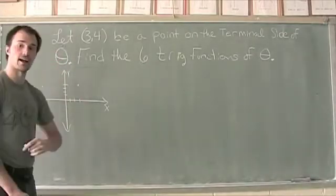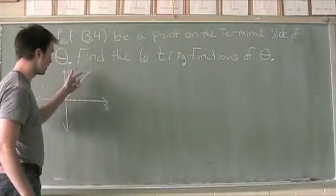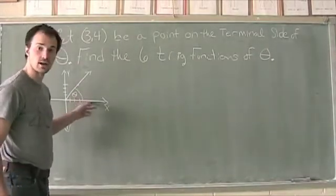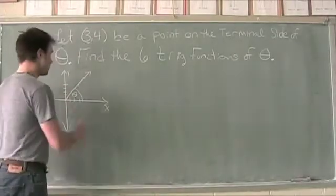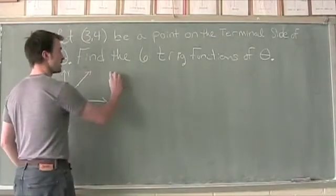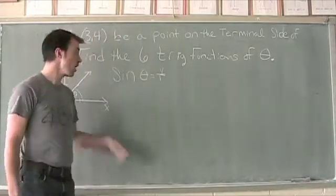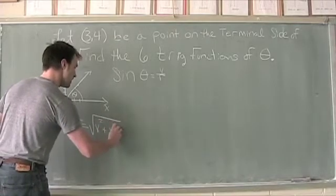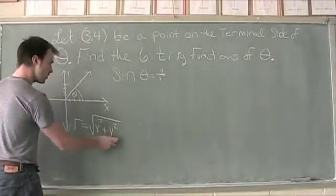This point is on the terminal side of theta. Drawing a ray from the origin through that point, our angle theta is measured from the initial side — the x-axis — up to the terminal side which runs through the point and through the origin. Now we need to find the six trig functions of theta. Sine of theta equals y divided by r, and r is the square root of x squared plus y squared — the distance from the origin to the point.